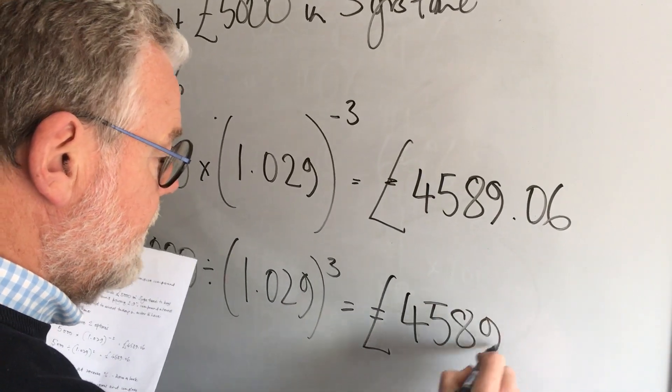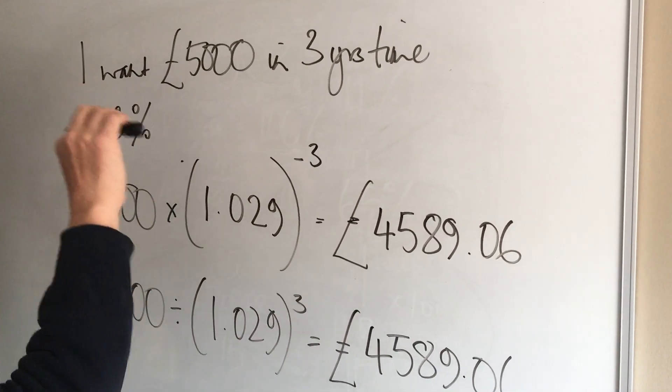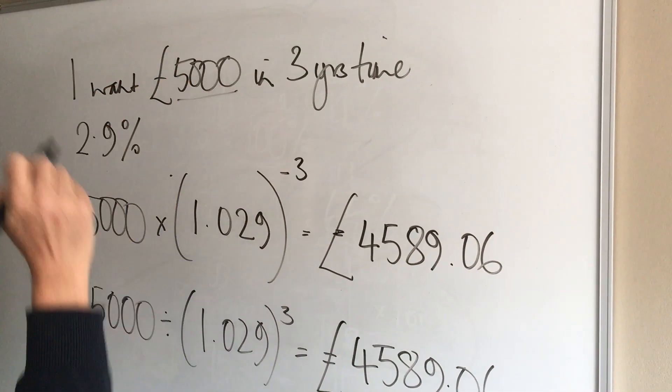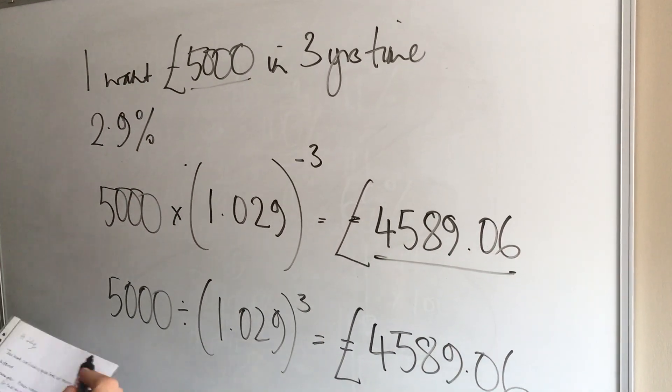£4,589 and we use this when we're working backwards, when we want to find a sum of money in the future and what would we need to invest to start and that's it.